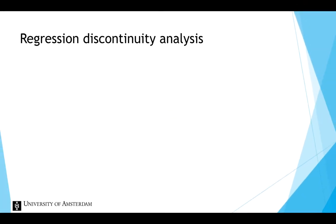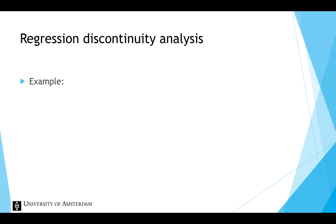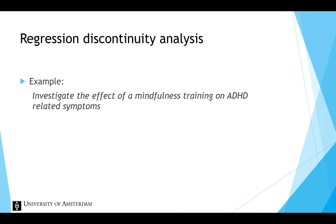All regression discontinuity analysis approaches start by looking carefully at a graph in which the pretest scores go on the x-axis and the posttest scores on the y-axis. Let's consider an example: we want to investigate the effect of a mindfulness training on ADHD-related symptoms in children. The dependent variable, ADHD-related symptoms, is measured before and after the treatment, so we have a pretest and posttest score for each child.